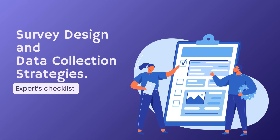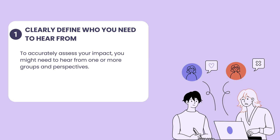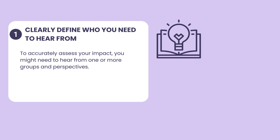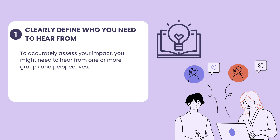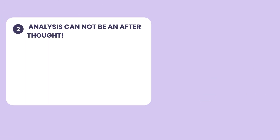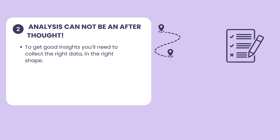Now let us jump to survey design and data collection strategies. First, clearly define who will fill out the survey forms. Understanding your audience is crucial — consider all relevant stakeholders to your program or research. For instance, include students, professors, and parents in an educational program. Each group can offer unique insights; for example, the perception of math confidence can be different among students, parents, and teachers. Second, analysis cannot be an afterthought. Effective survey design integrates analysis from the beginning. Think ahead about the insights you want to derive from your data. If you're interested in understanding earnings progress across gender or age diversity, you'll need to collect detailed demographic information upfront, such as gender, age, or ethnicity.